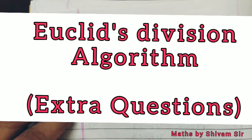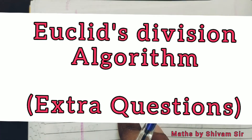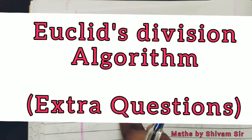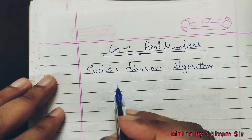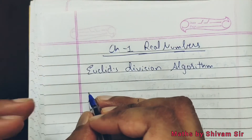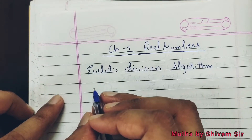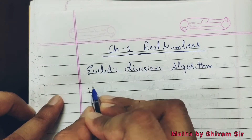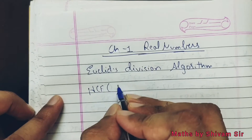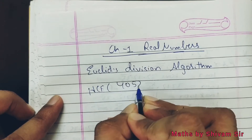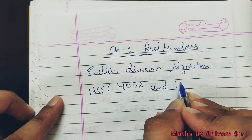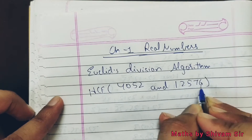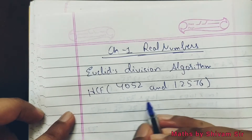Hello everyone. In this video we are going to discuss certain questions — some high-level advanced questions — based on Euclid's division algorithm. Let's understand this algorithm using this question: we have to find the HCF of 4052 and 12576.